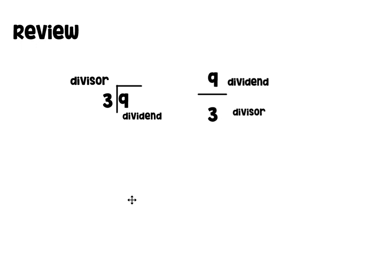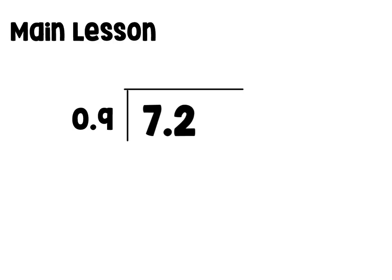Another example: 24 divided by 6. 24 is our numerator divided by 6, our denominator. That's going to be very useful today in our main lesson when we look at dividing decimals.